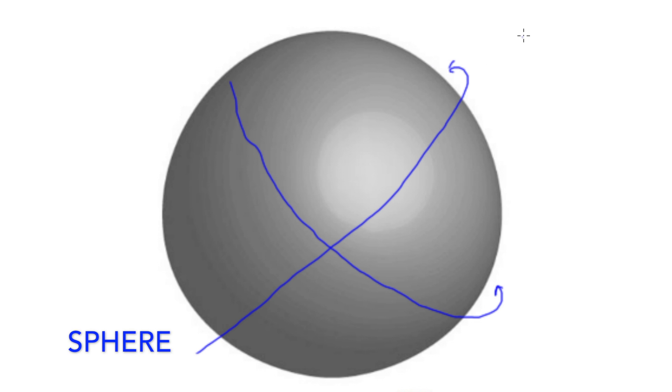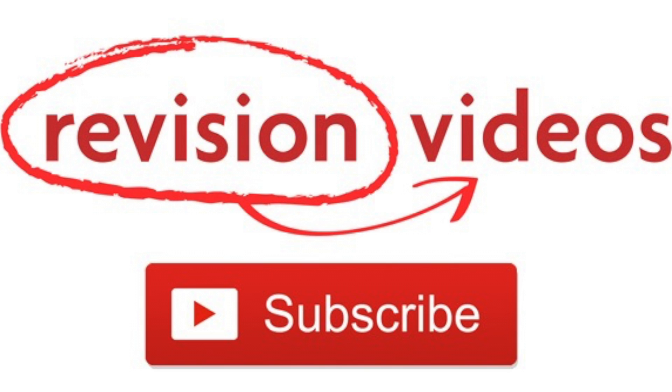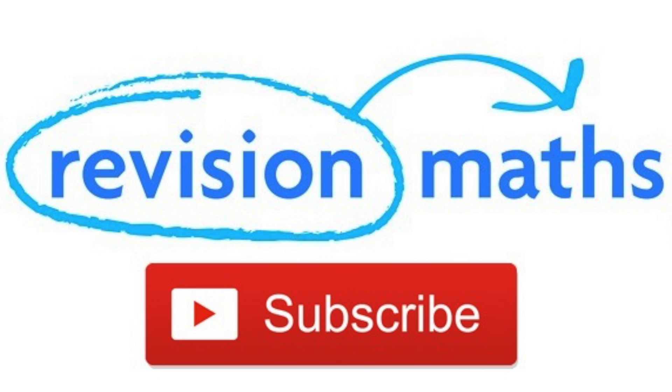Finally, a sphere has no edges or vertices, therefore it just has 1 face going all the way around the outside.